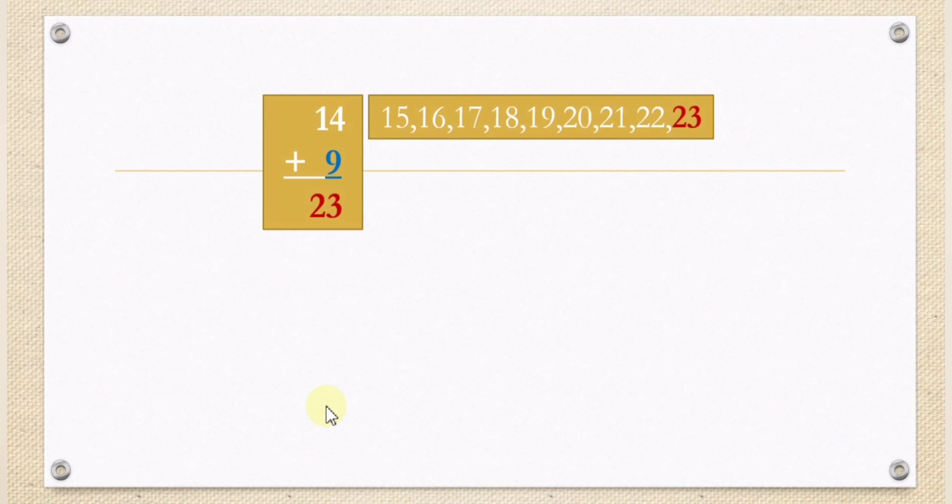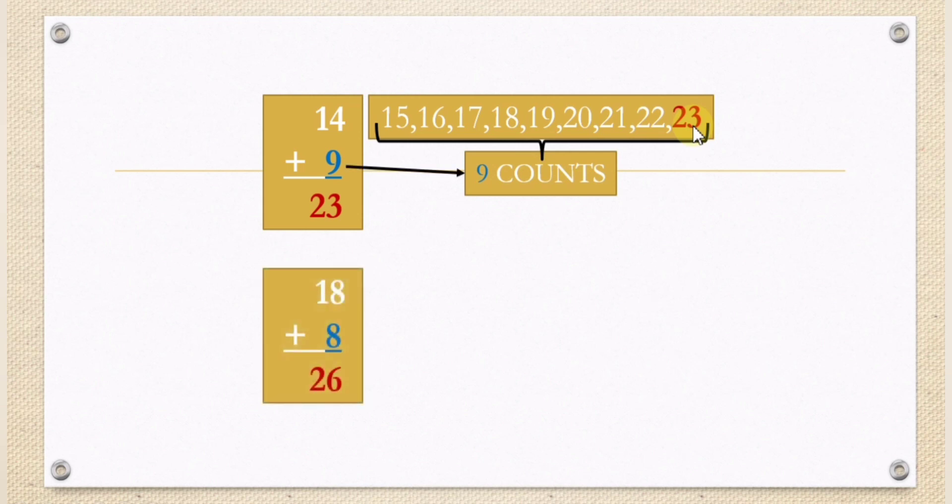This method is what we call count on method. How many counts? We will have 9 counts after 14. Start with 15, 16, 17, 18, 19, 20, 21, 22, 23. 23 is in the 9 counts, so the result is 23 of 9 plus 14.